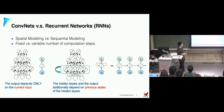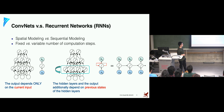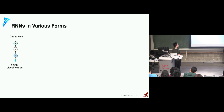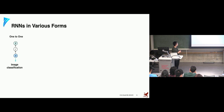The number of computation steps is variable in sequence modeling, which is different from spatial modeling where the number of computational steps is fixed. Recurrent networks can have different forms. Image classification can be seen as a special case — a one-to-one computation with only a single step of modeling.